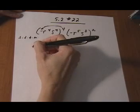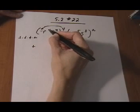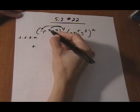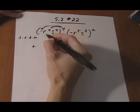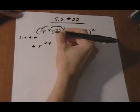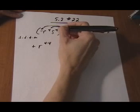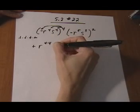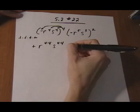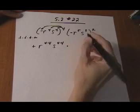Then we have r to the fourth raised again to the fourth power. A power to a power, you multiply the exponents, so we get r to the 4 times 4. S to the fourth raised to the fourth power - power to power means multiply, so s to the 4 times 4, times the result of the other parentheses.